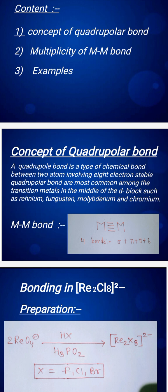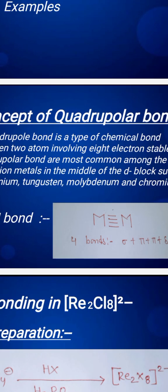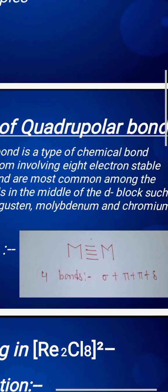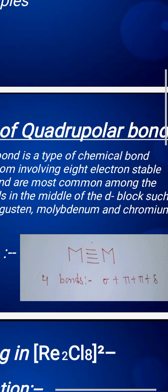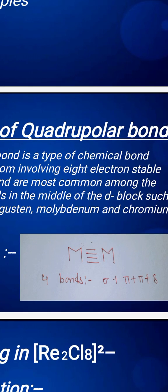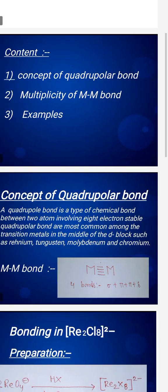If you have two metals forming four bonds, then this is called a quadrupolar bond. A quadrupolar bond consists of one sigma, two pi, and one delta bond.